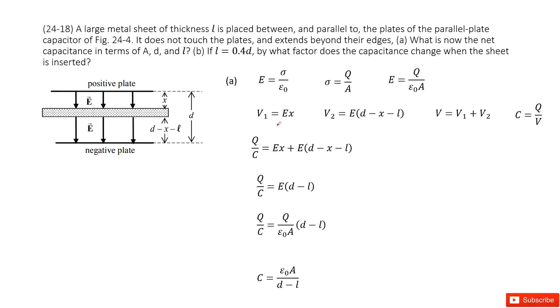There you can see we have a large metal sheet of thickness L placed parallel to the plates of a parallel plate capacitor. This is a capacitor, this is a metal sheet with length L. We can consider this region as L and this region as L, so the rest region must be D minus L minus L.